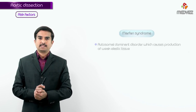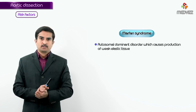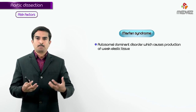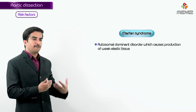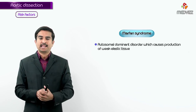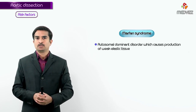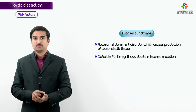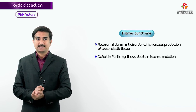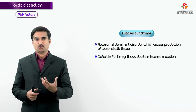What is Marfan syndrome? It is an autosomal dominant disorder that causes production of weak elastic tissue. The weakening occurs because of a defect in fibrillin synthesis, mainly due to a missense mutation.